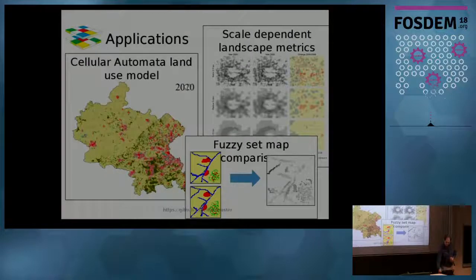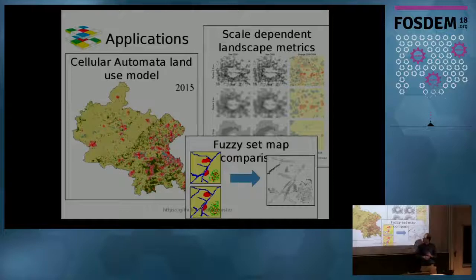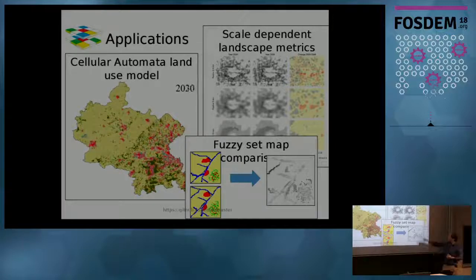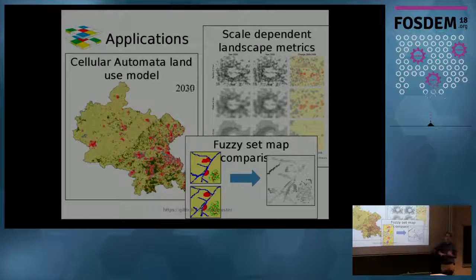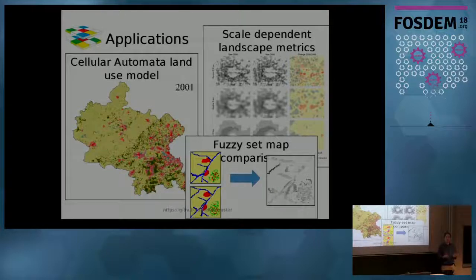What kind of applications do we have? I use it for cellular automata land use modeling, for scale-dependent landscape analysis, and for fuzzy-set map comparison. All of these things can be done very efficiently thanks to the clever design of the library.